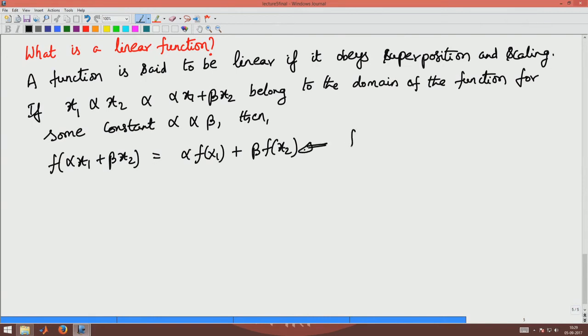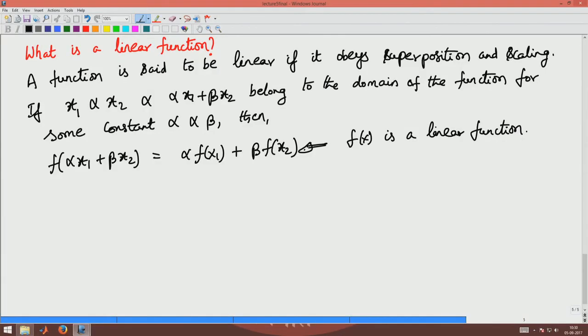This implies f(x) is a linear function. This does not mean that the graph of the function will always be a straight line. Yes, it is a straight line for a scalar valued function, but if you think of the function being a differential equation, then the solution to the differential equation need not be a straight line, but the differential equation still be a linear differential equation. So all that you have to do is check whether this relationship holds for the given function.